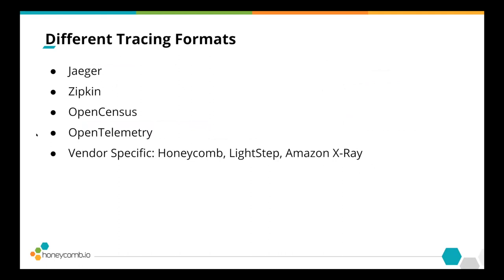There are a bunch of different tracing formats out there. Zipkin and Jaeger were part of the OpenTracing standard, which defined an API and structure for tracing data. OpenCensus was another system with roots in Google that became quite popular. This created a problem where two competing standards existed, which isn't great for users or vendors. So a bunch of people got together and created the OpenTelemetry project with the goal of combining OpenTracing and OpenCensus into one unifying standard for telemetry data. My talk is focused on tracing, but OpenTelemetry also deals with metrics and increasingly logging.